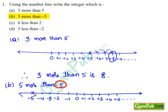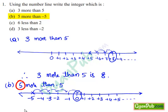Now move 5 more steps to the right of minus 5: 1, 2, 3, 4, 5. We reach 0. Hence, the integer which is 5 more than minus 5 is 0.